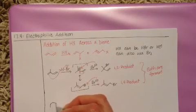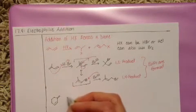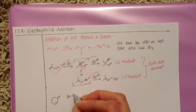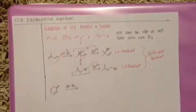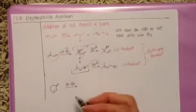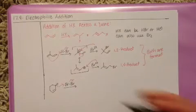Here's another example. This one I'm going to choose to do it with the Br2 to give you a chance to see how that looks as opposed to the HX. So again we're going to choose one of the dienes to attack the bromine.